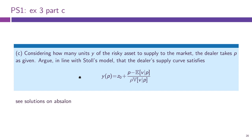Part C says: considering how many units Y of the risky asset to supply to the market, the dealer takes price P as given. Arguing in line with the Stahl model, the dealer supply curve satisfies this equation. This is the centerpiece of the Stahl model and of this particular Kyle model with risk aversion. I feel like you're not comfortable with understanding how the dealers make their decisions in these models, and this is understandable because it's somewhat of a funky logic that's not fully internally consistent.